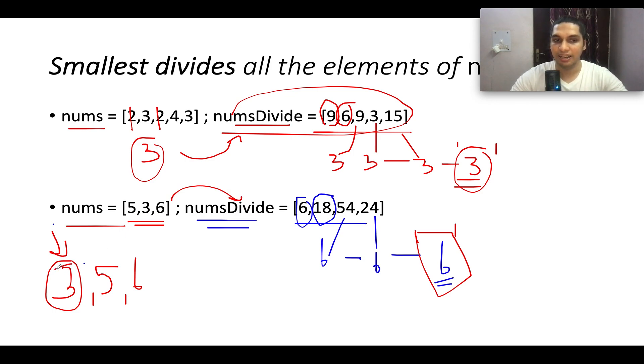Had it been the case instead of 3, we would have 5. Then what we would have done: we would have checked whether 5 divides 6 or not. 5 doesn't divide 6. Let's proceed ahead. Next again, we check 5 divide 6 or not. 5 doesn't divide 6. Again, let's proceed ahead.